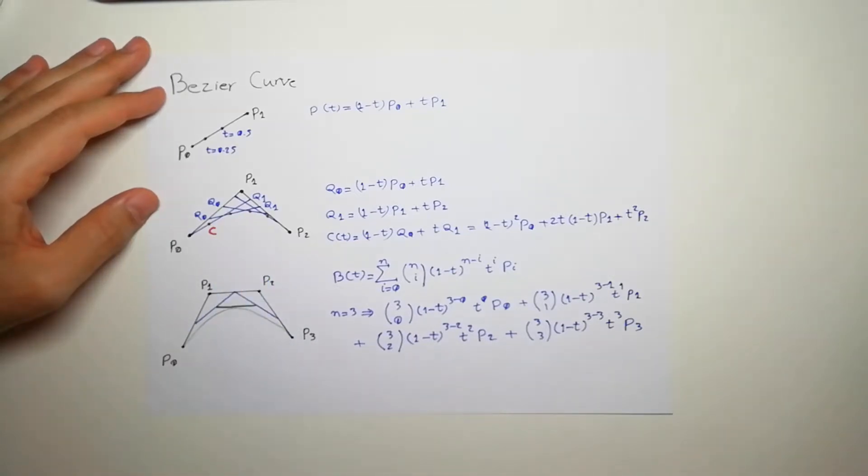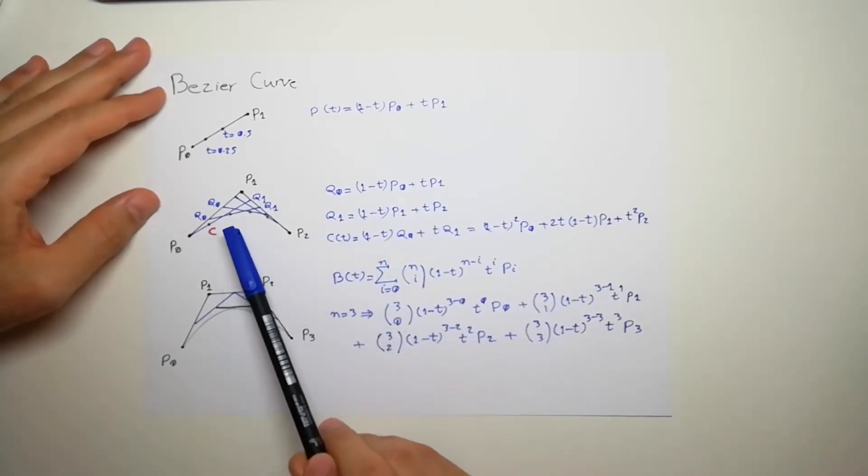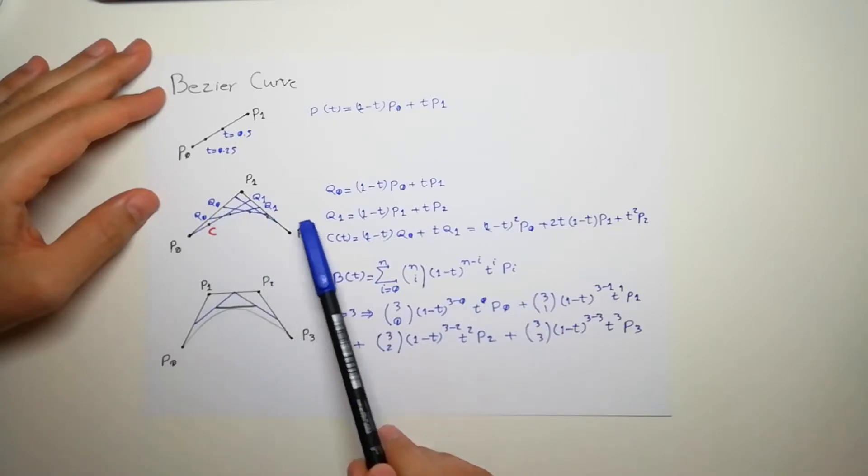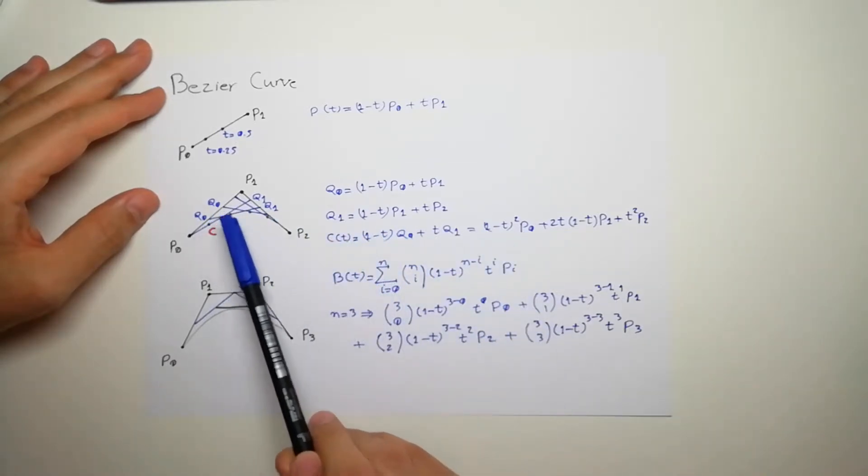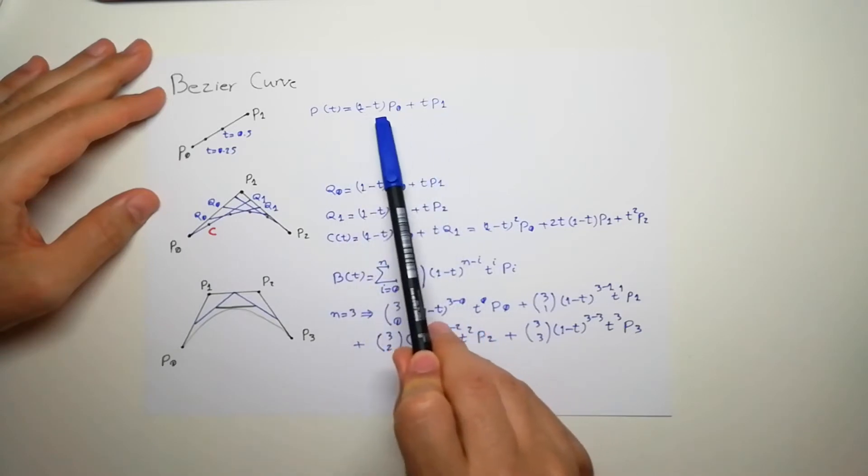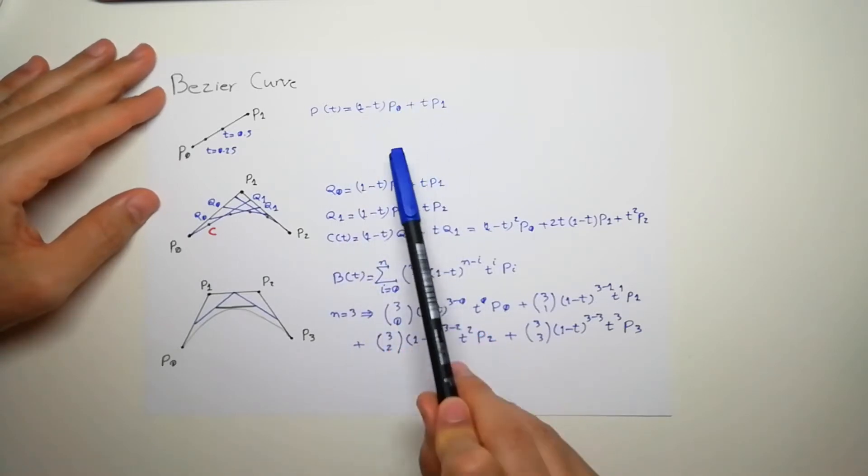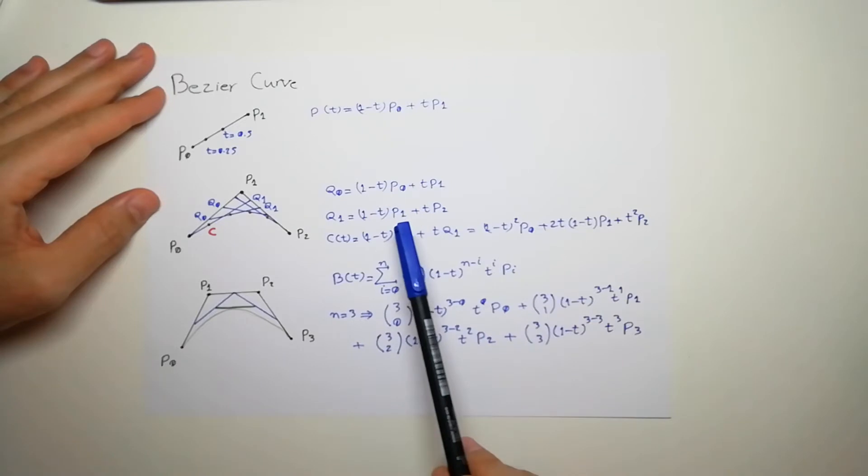So q0 is exactly like this, q1 is exactly like this. And every point in this line is again exactly like this: one minus t multiplied by the start point which is q0, and q0 we know that we have the equation.